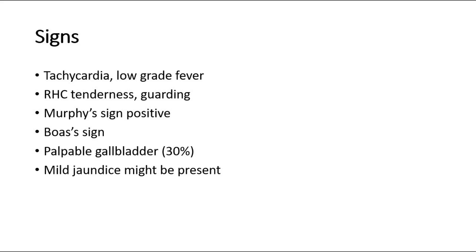In 30% of cases, the gallbladder may be palpable if it is in the late stage already, where the omentum wraps around the gallbladder. The worst case scenario is empyema of the gallbladder, which is one of the complications of cholecystitis. Mild jaundice may be present. If there is severe jaundice, we should consider other differential diagnoses instead of cholecystitis.